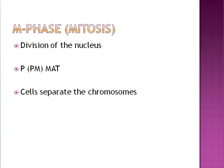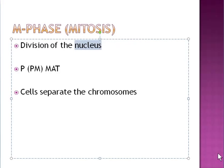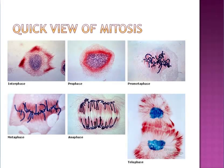Mitosis will be covered in a different lecture. For now, the definition of mitosis is the division of the nucleus. It comes in several phases: prophase, prometaphase, metaphase, anaphase, and telophase. In the mitosis lecture you'll learn the details of what's going on in each of these phases, but for now the base definition of the M phase is the division of the nucleus.